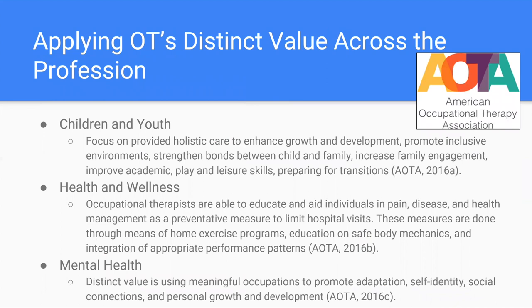There are some key areas of practice that OT notes, and we'll go through the distinct value across these areas. The first is working with children and youth. OT will take a holistic route to enhance growth and development, promote inclusive environments, strengthen bonds between children and their family, increase family engagement with daily occupations and routines to improve academic, play, and leisure skills, and help families and children prepare for transitions within education and into work.